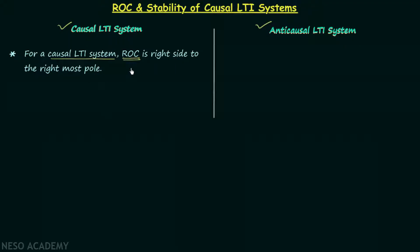This property is the same as the property we saw for right-sided signals. If you remember the lecture in which I explained all the properties of ROC, one property states that if we have a right-sided signal, the Laplace transform will have a region of convergence existing on the right side of the rightmost pole — and the same applies for a causal LTI system.